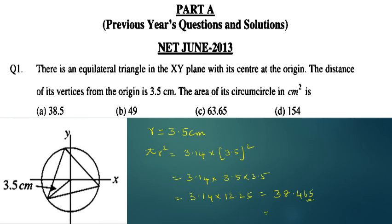The area of the circle is 38.5 cm². So option A is correct.